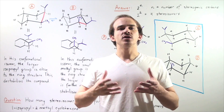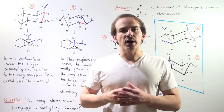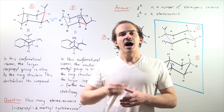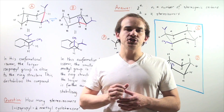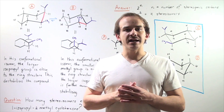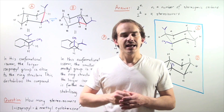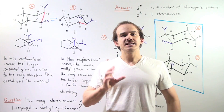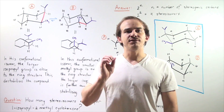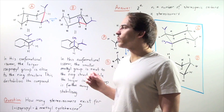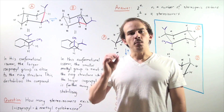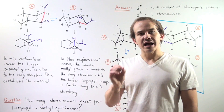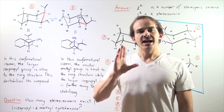In this lecture, we're going to continue our discussion on axial and equatorial positions found on cyclohexane. Let's begin by looking at the following cyclohexane: 1-isopropyl-2-methylcyclohexane.